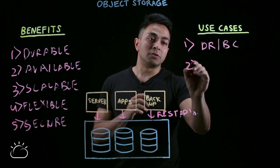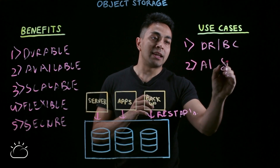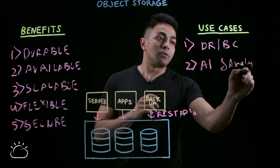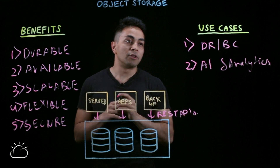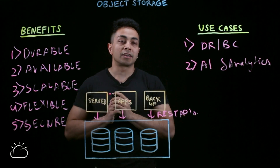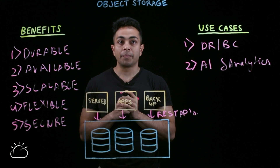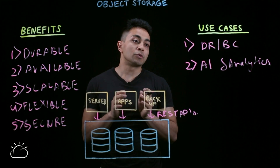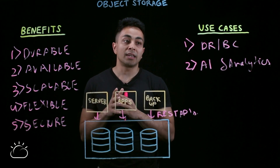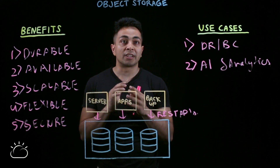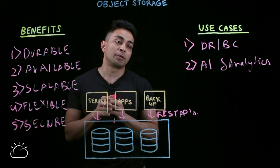The second use case is AI and analytics. Take an example of a healthcare company — you have large amounts of healthcare data and you want to run analytics on top of it. Object store is a great solution to use as a data lake, and you can run frameworks like Spark or TensorFlow on top of it.